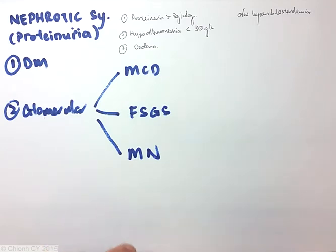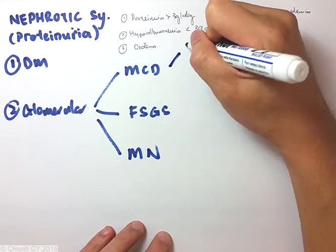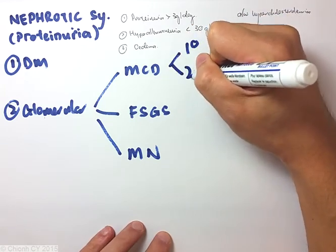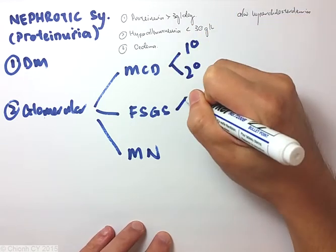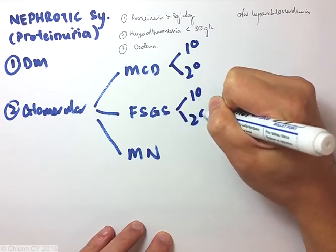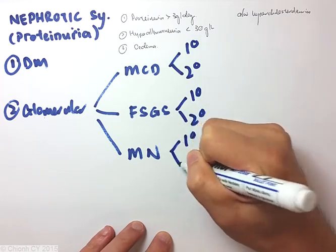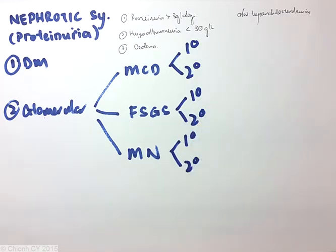Each of these histological subtypes have got primary causes or secondary causes. Primary causes being an unknown cause, while secondary causes may be due to other factors.